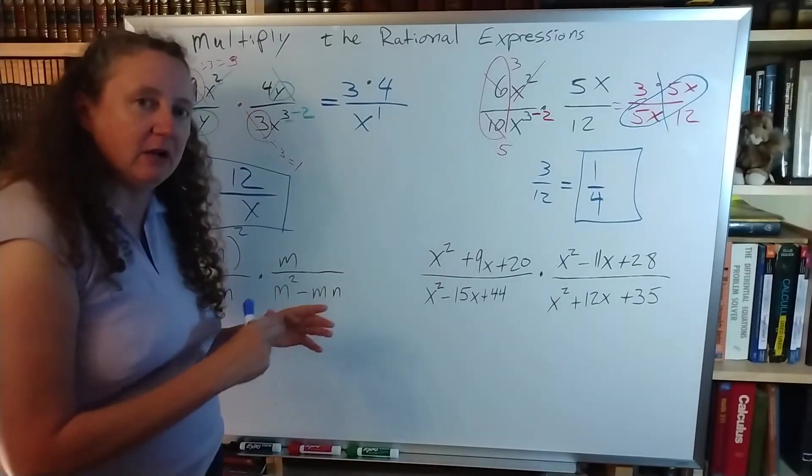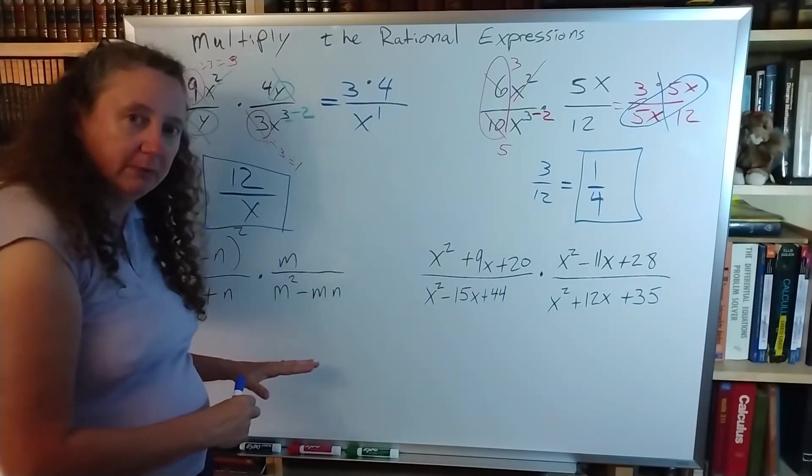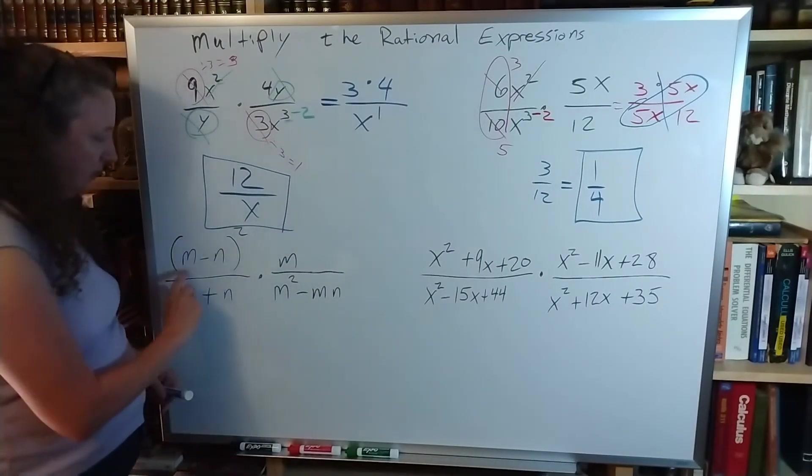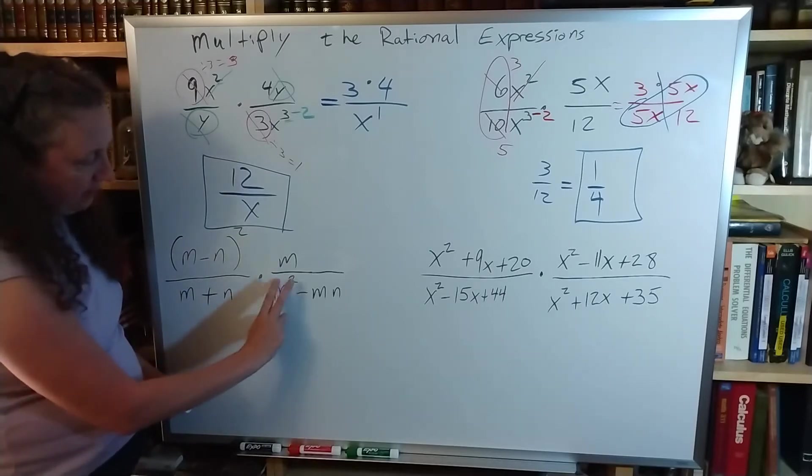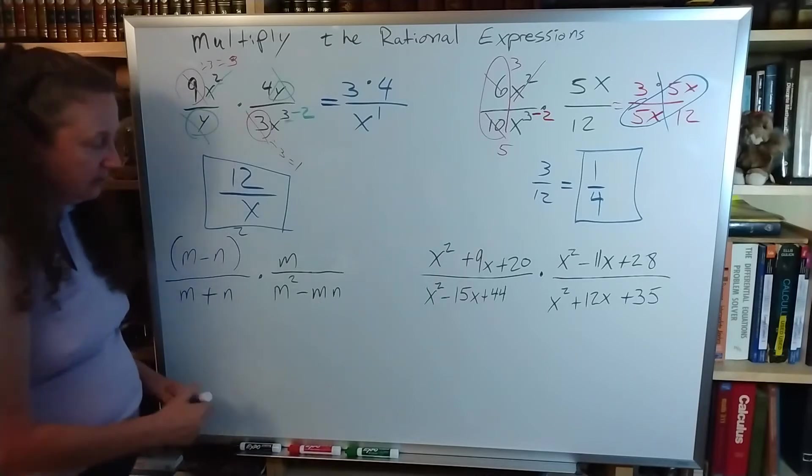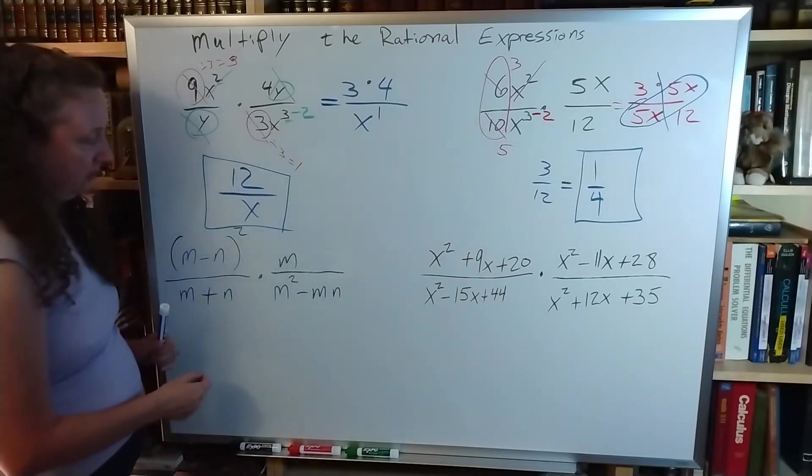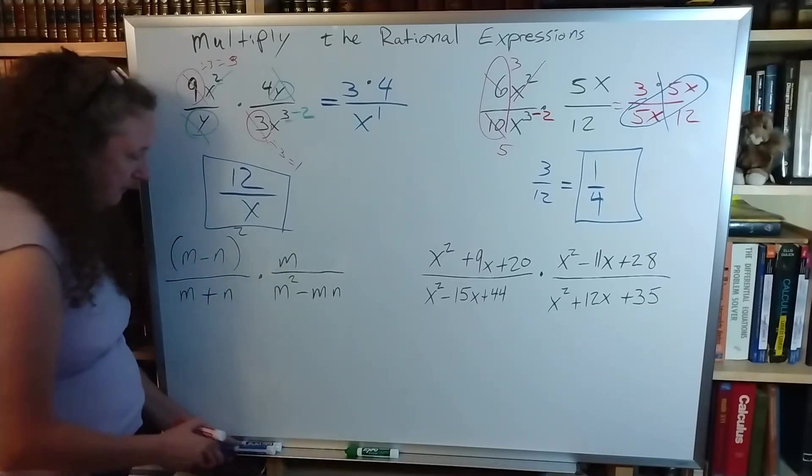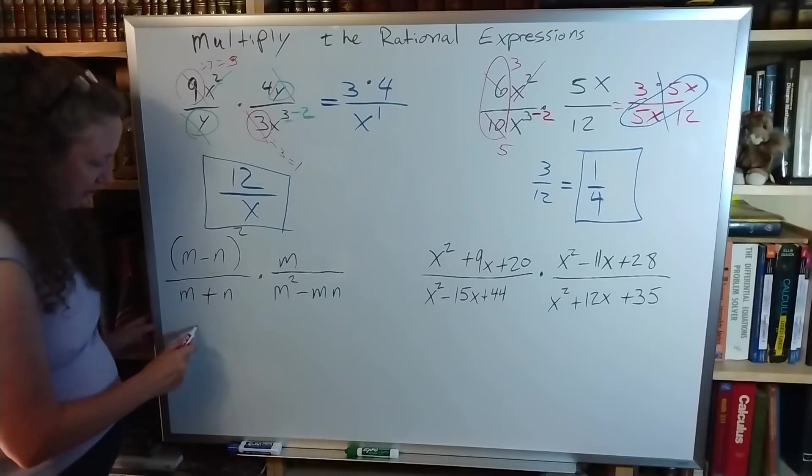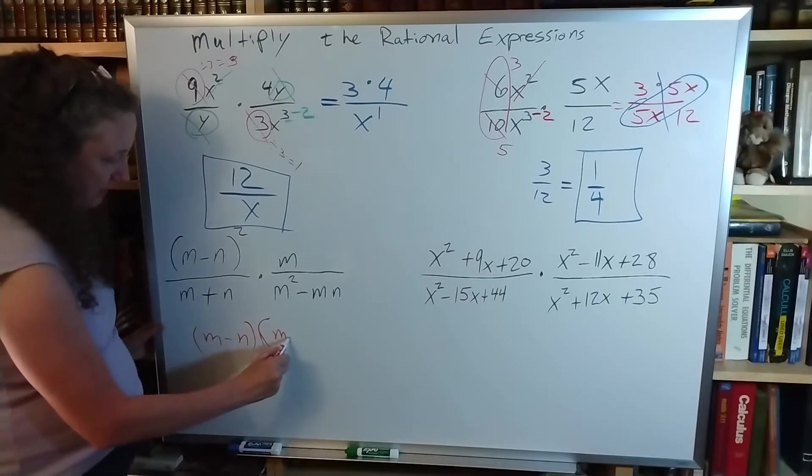So those didn't take any factoring of the polynomials to deal with. Down here we have to factor the polynomials before we can start canceling. So I just see this m minus n is raised to the second power there. I see here m is raised to the second, and then here it's multiplied by n. So I'm going to rewrite this as parentheses times parentheses, and I'm going to factor an m out of that.